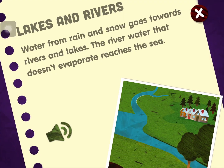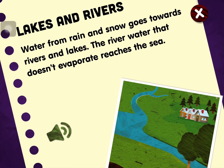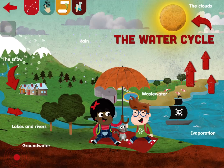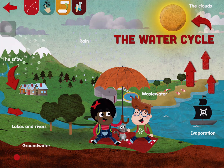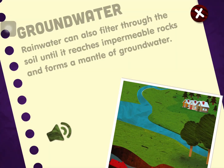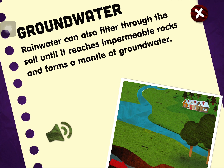Lakes and rivers. Water from rain and snow goes toward rivers and lakes. The river water that doesn't evaporate reaches the sea. Rain water can also filter through the soil until it reaches impermeable rocks and forms a mantle of groundwater.